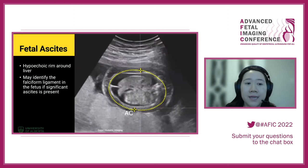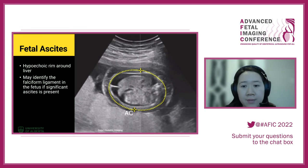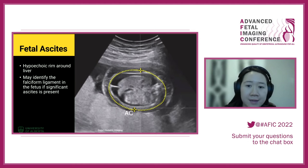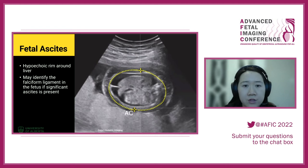With fetal ascites, we're looking for a hypoechoic rim within the abdomen, specifically around the liver. In this transverse view — an attempt at an abdominal circumference — there is so much fluid that we can actually see the fetal liver and the falciform ligament. Another clue is that the skin is also thickened in this image.